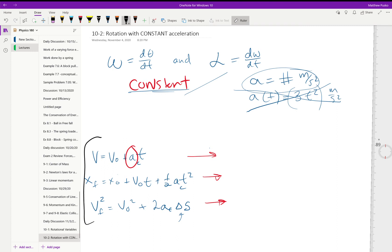But basically, instead of velocity right here, we have angular velocity is equal to the initial angular velocity plus the constant angular acceleration times time.